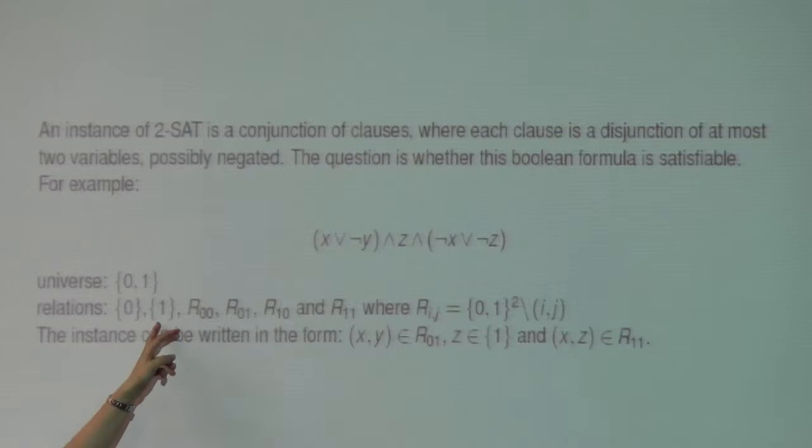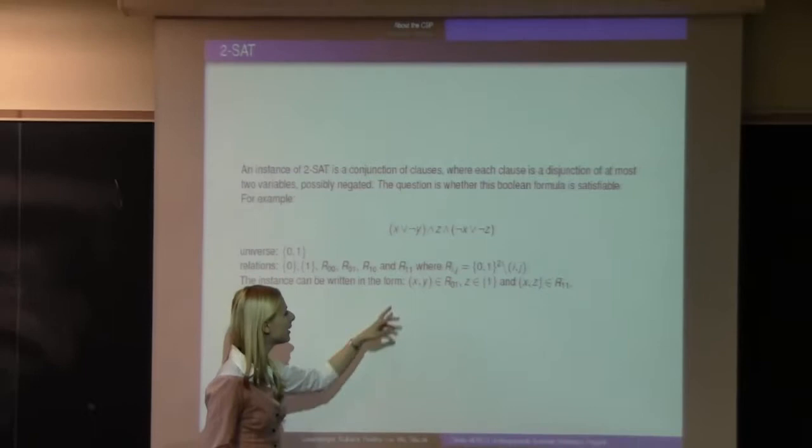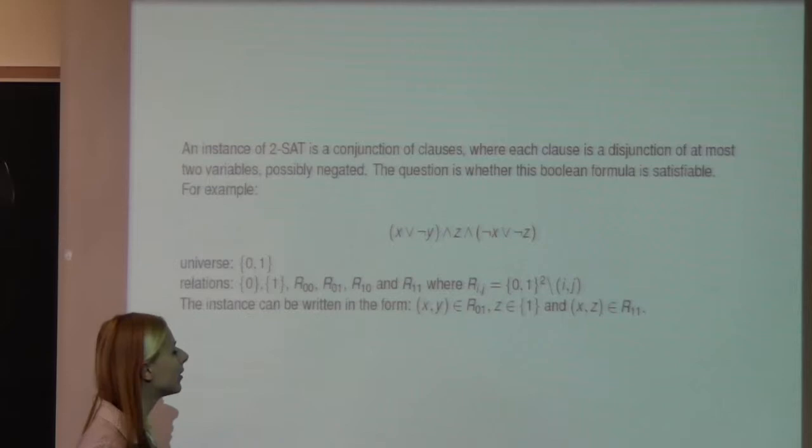If a variable is negative and standing alone, it has to be in the 0-relation. And, for example, the first clause has to be in the relation where all the binary pairs are not (0, 1), because if x is 1, we are good, and if y is 0, we are good too. But if x is 0 and y is 1, that is the only way the formula is not satisfiable.